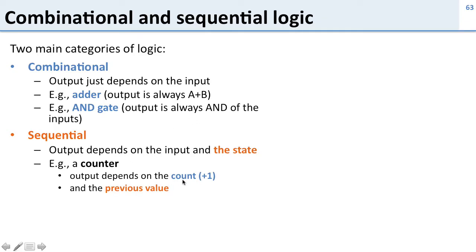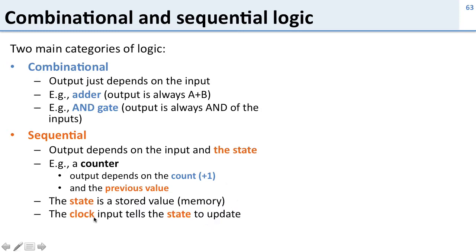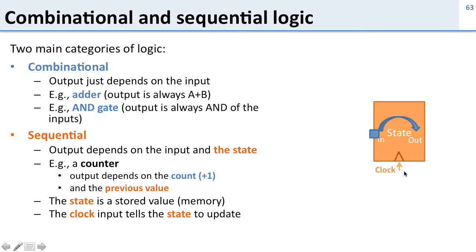For sequential logic, we have the counter example: the output depends on the previous count value. Somewhere inside the counter we store the previous value and add one to generate the next value. This storing of a value inside the circuit is what makes it sequential. The state is a stored value, and we use a clock input to tell us when to update. This little triangle on the state element diagram indicates a clock connection — when the clock signal comes in, the input transfers to the output.